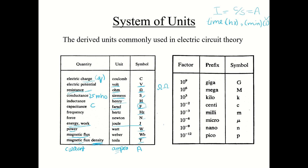Some important factors you have to remember: if I say millifarad, milli means 10 to the power minus 3. Micro is 10 to the power minus 6. Nano is 10 to the power minus 9. Pico is 10 to the power minus 12. Giga is 10 to the power 9, which is the inverse of nano. Mega is 10 to the power 6. Kilo is the inverse of milli. Centi is 10 to the power minus 2 — most students make a mistake here, so please keep it in mind.